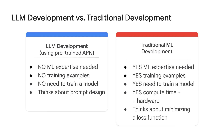Let's compare LLM development using pre-trained models with traditional ML development. With LLM development, you don't need to be an expert. You don't need training examples, and there is no need to train a model. All you need to do is think about prompt design, which is the process of creating a prompt that is clear, concise, and informative. It is an important part of natural language processing. In traditional machine learning, you need training examples to train a model, and you also need compute time and hardware.